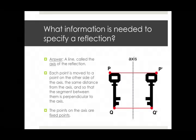Now, returning to reflections, what information is needed to specify a reflection? The answer is, you just need to name a line. Name a line. Specify a line. That line tells you exactly what you're supposed to do. That line is called the axis of the reflection.